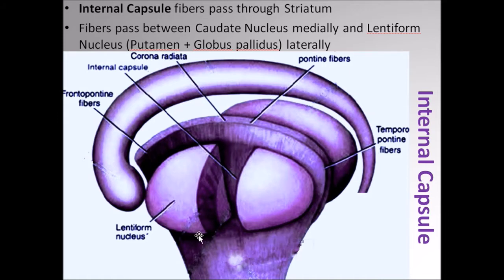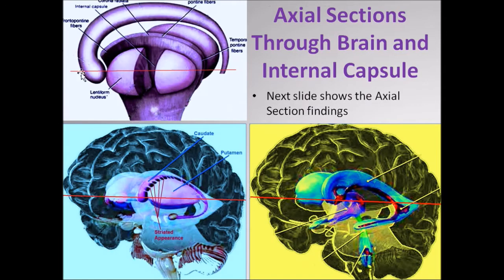This is another picture to show how the corona radiata fibers converge in the region of the basal ganglia to form the internal capsule. The structure we see here is the putamen or the lentiform nucleus, and this structure is the caudate nucleus. We shall take an axial section through the brain to understand exactly the structure and orientation of the internal capsule. We will take an imaginary axial or transverse section through the brain at this level. This red line represents roughly the level of the axial section, and once we take that axial section and look at the brain from the top, this is the axial view of the internal capsule.